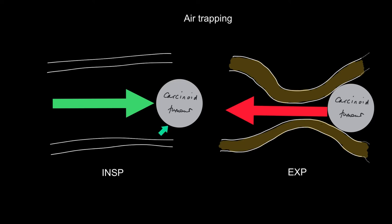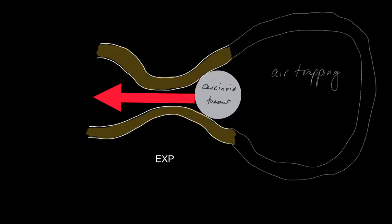In a similar way, a carcinoid tumour could, over a long time, lead to air trapping. The carcinoid tumour is smaller than the diameter of the bronchus, but during expiration the bronchial walls come together in physiological narrowing, causing air trapping because the carcinoid tumour then stops air coming out. Over a long time, this leads to pulmonary arterial vasoconstriction.